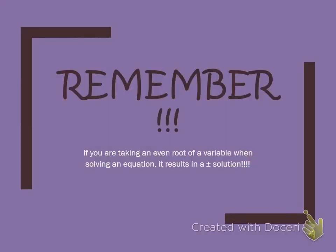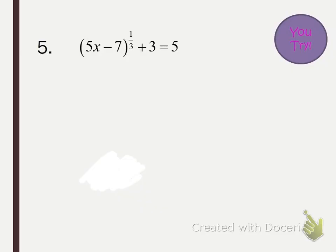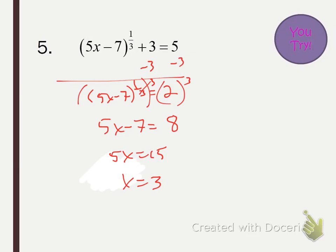Remember: if you're taking an even root of a variable when solving, make sure your solution is plus or minus. Take a second and try number 5 on your own — stop the video and then start it back up to see if you got it right. You've got to subtract 3 from both sides first, then raise both sides to the third power. That's the reciprocal of one-third, which is 3 over 1 — we just don't write the 1 in the denominator. The answer is x equals 3.